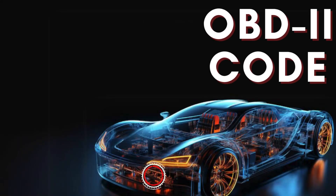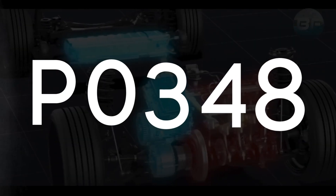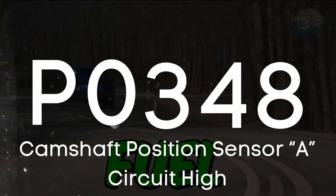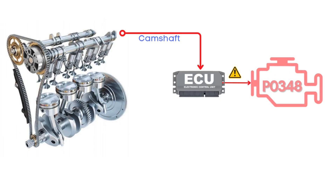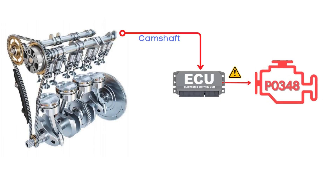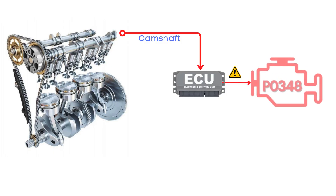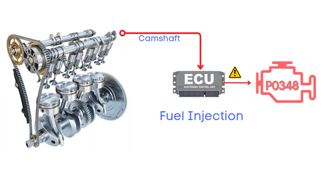In this video, we're diving into everything you need to know about OBD-II trouble code P0348, also known as camshaft position sensor A circuit high. The P0348 code means that the ECM detects that the signal from the camshaft position sensor is outside the expected range, or too high. This sensor plays an important role because it helps the ECM figure out the exact position of the camshaft, which it needs in order to manage fuel injection and ignition timing.